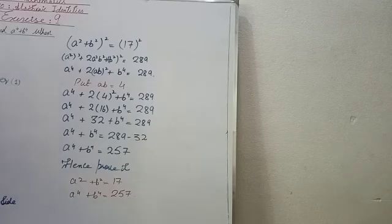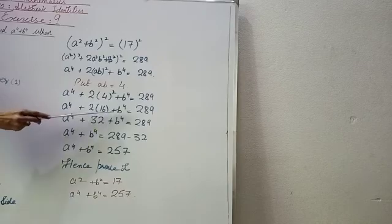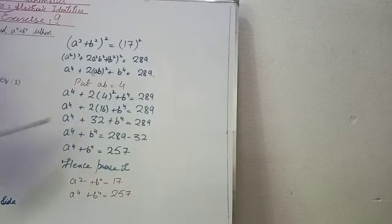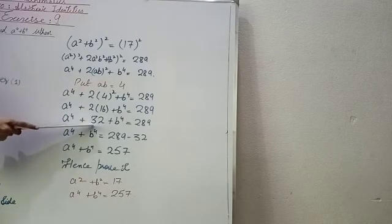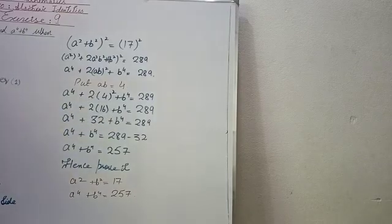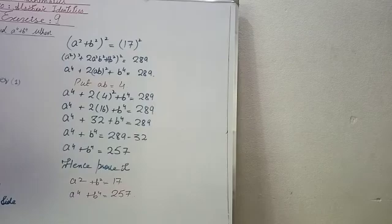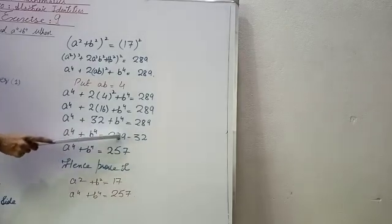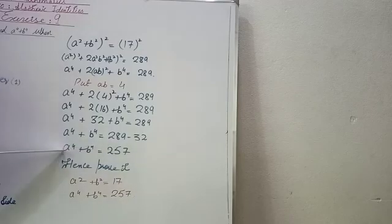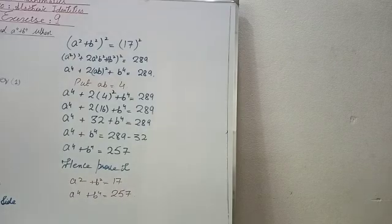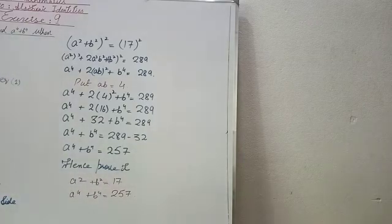Multiplying 2 × 16 = 32, so a⁴ + 32 + b⁴ = 289. Therefore a⁴ + b⁴ = 289 − 32 = 257. Both conditions are proved: a² + b² = 17 and a⁴ + b⁴ = 257. That's all for today — take care, Allah Hafiz.